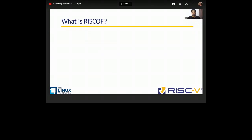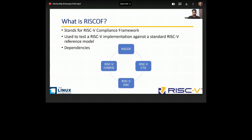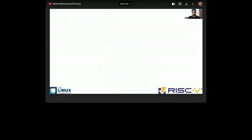Let's talk about RISC-OF. RISC-OF stands for RISC-V compliance framework. It is used to test a RISC-V implementation, hard or soft, against a standard RISC-V golden reference model. It depends on the following tools. RISC-V config is a tool which helps us validate the specification of a DUT. RISC-V CTG helps us generate tests for architectural testing. And RISC-V ISAC helps us calculate the coverage through that test.